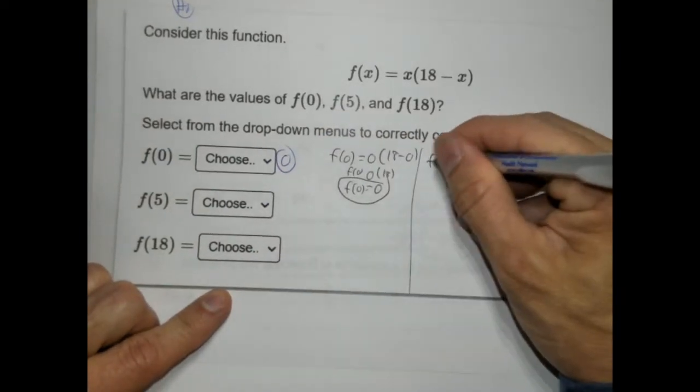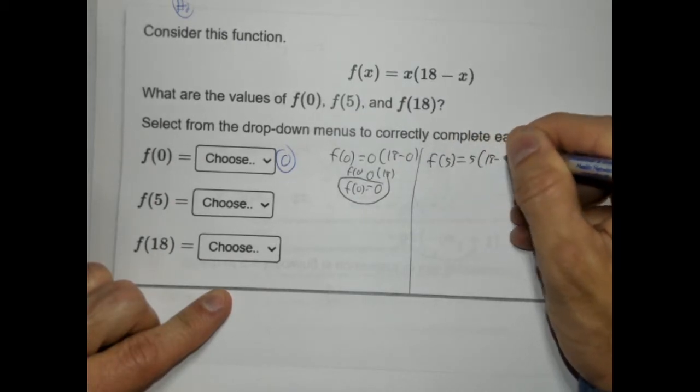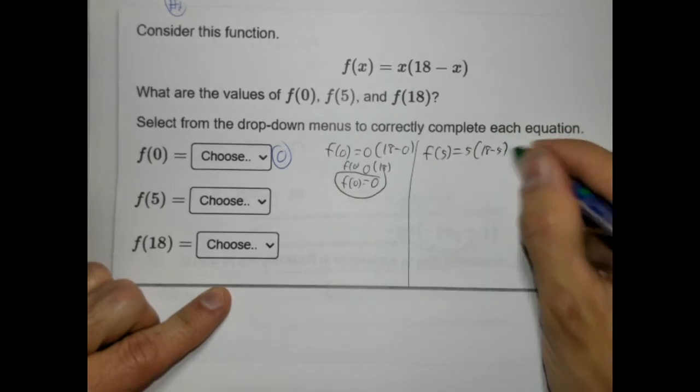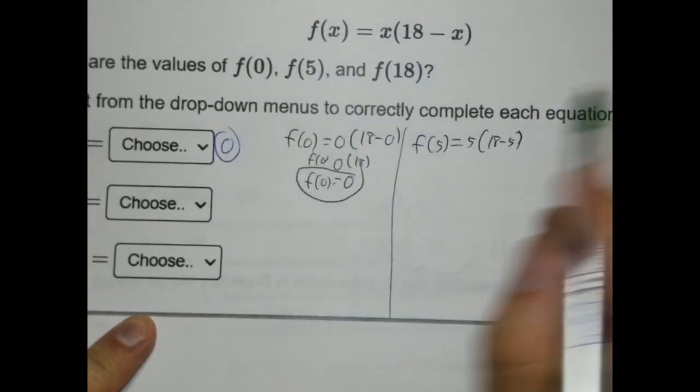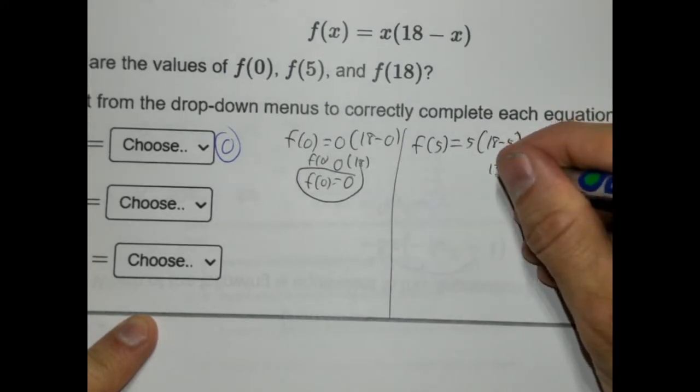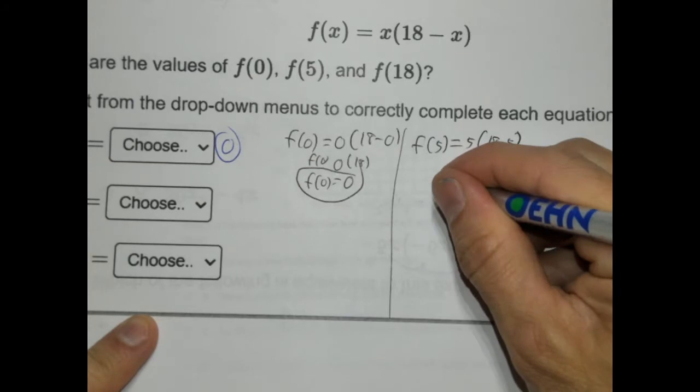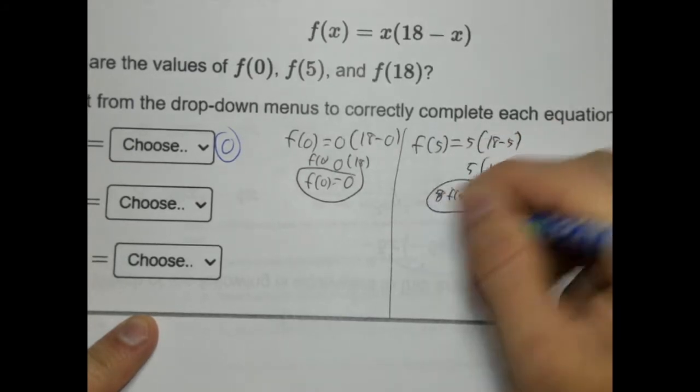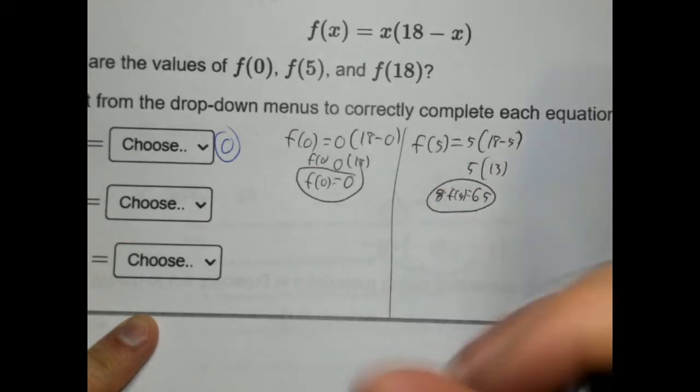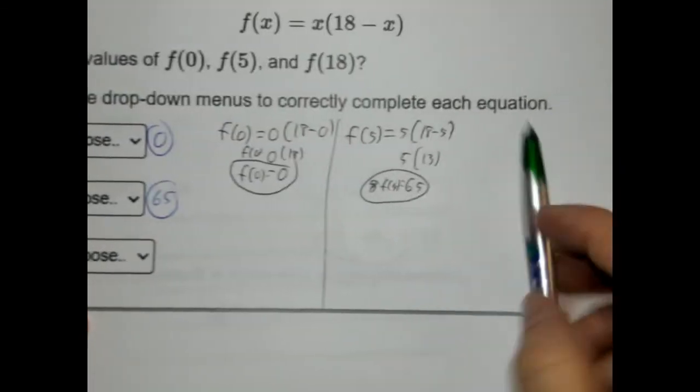Now, f(5). So f(5) equals 5(18 - 5). We have to follow our order of operations here. I'm going to zoom in a little bit. 18 take away 5 is 13. 5 times 13 is 65. So f(5) equals 65, and that's what we put right here. And that's one of the options.